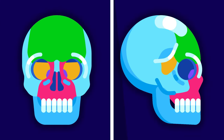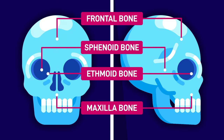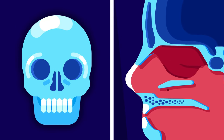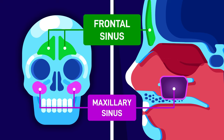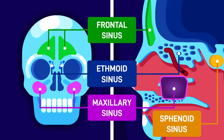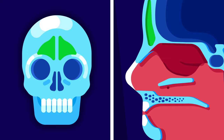The sinuses are named after the bones that they are located in. There are four sinuses in our skulls: maxillary, frontal, sphenoid, and ethmoidal. Now, let us enter those hollow spaces one by one.